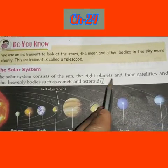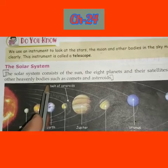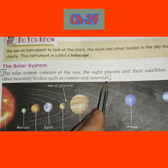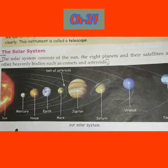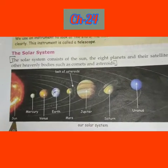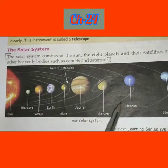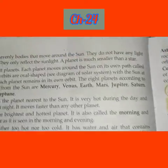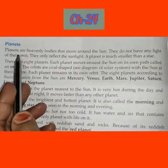The next topic is the solar system. The solar system consists of the sun, the eight planets and their satellites, and other heavenly bodies such as comets and asteroids. Look at the picture showing all the planets — please copy this picture into your notebook.